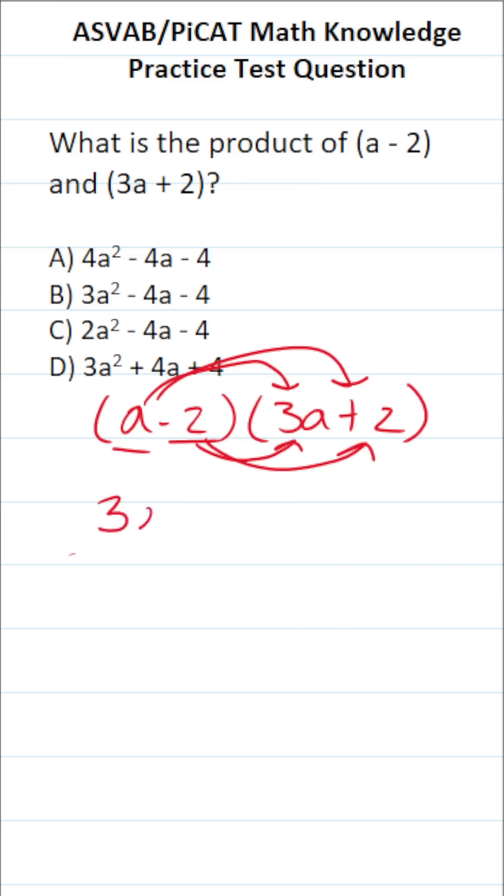a times 3a is going to be 3a squared. a times 2 is 2a. Negative 2 times positive 3a.